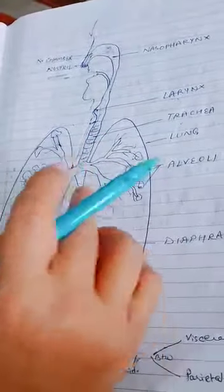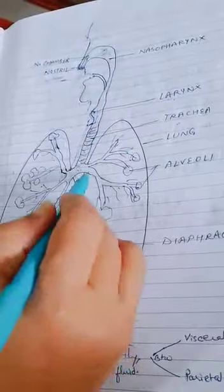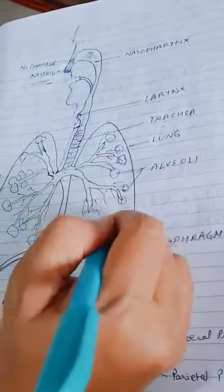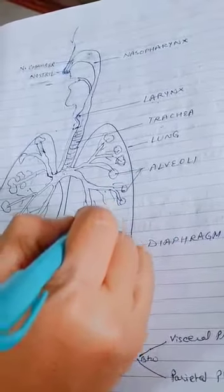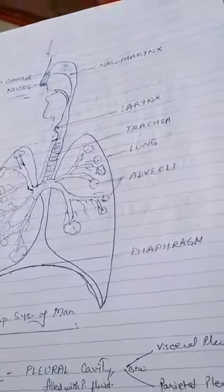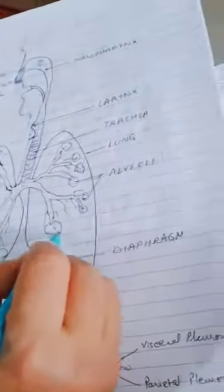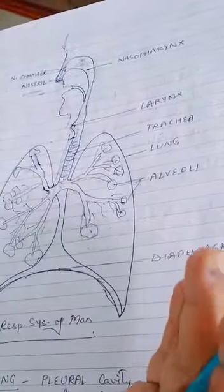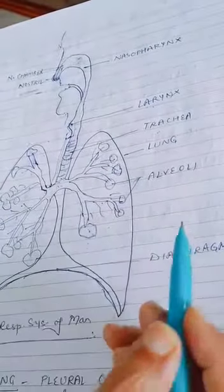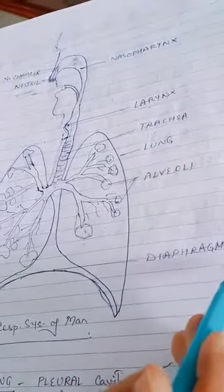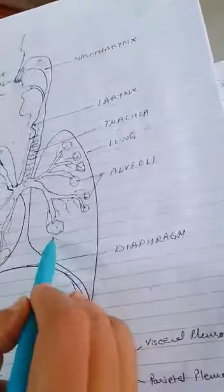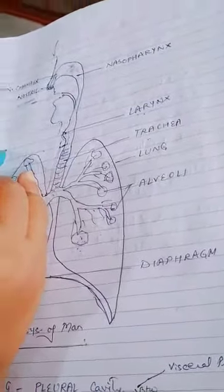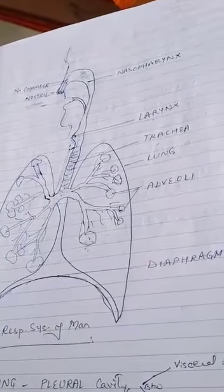When air reaches the lungs, it enters a network of tubular structures which end in sac-like structures called alveoli (singular: alveolus). This is basically where gas exchange takes place. The alveoli are very thin-walled and richly supplied with blood vessels. The pulmonary artery brings deoxygenated blood from the right ventricle to the lungs, where carbon dioxide is taken from the blood and oxygen is exchanged.